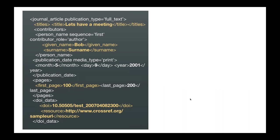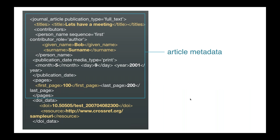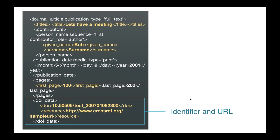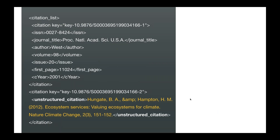A journal article has basic metadata like article title, author name, publication date, pages, and of course a DOI and a URL. The metadata collected for content types will differ, but you'll be able to supply a title, contributor, and publication date for all of them. Everything is sent to us as XML.